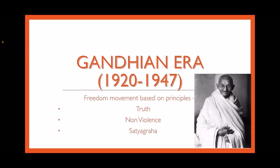In 1915, at the age of 45, he returned to India. The period from 1920 to 1947 in the Indian freedom movement is known as the Gandhian era. After the death of Lokmanya Tilak in 1920, the reigns of the national movement went into the hands of Mahatma Gandhi. He gave a new direction to the freedom movement with the principles of truth, non-violence, and Satyagraha.